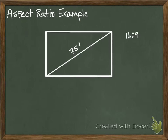Let's say I'm upgrading the TV in my living room. I kind of want a 75 inch, but I'm not sure if it's going to fit in the space that I have. So I need to figure out what the width and the height are, because that's what I need. I need the width, I need the height. I don't know those, but I do know that the diagonal is 75 inches, and I know the aspect ratio is 16 to 9.